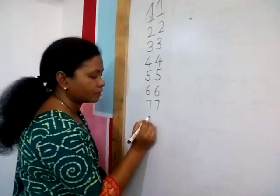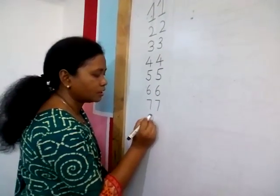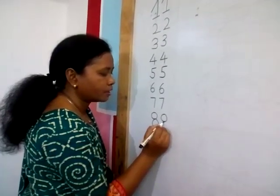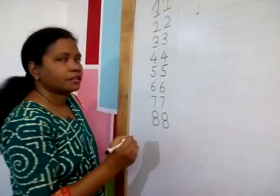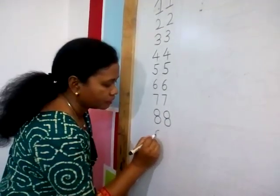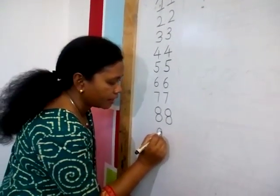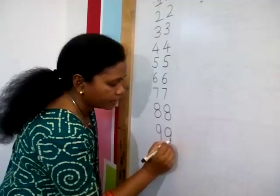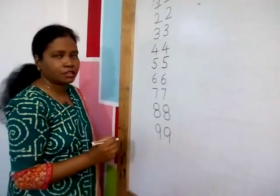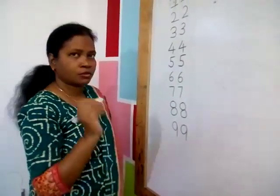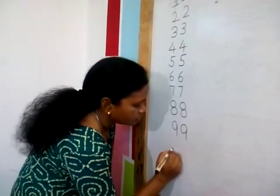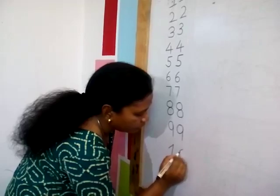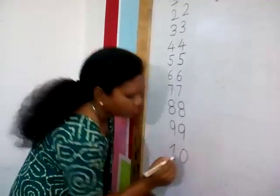Next comes 8 — make 1 circle, make another circle. Make 1 circle, make another circle. Next comes 9 — make 1 circle and standing line. After 9 comes 10 — 1, 0, 10. Slanting line, standing line, sleeping line and make 1, 0. This is 10.